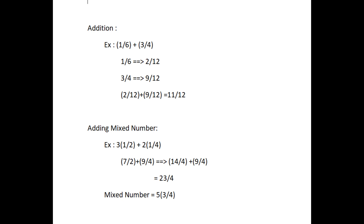Next, let's see addition of mixed numbers. Consider the two mixed numbers 3½ and 2¼. First, convert these mixed numbers into improper fractions: that is 7/2 and 9/4. Find the LCM of 2 and 4, which is 4. Convert 7/2 to the equivalent fraction 14/4. Now both fractions have the same denominator, so 14/4 plus 9/4 equals 23/4. Finally, convert this improper fraction into the mixed number 5¾.